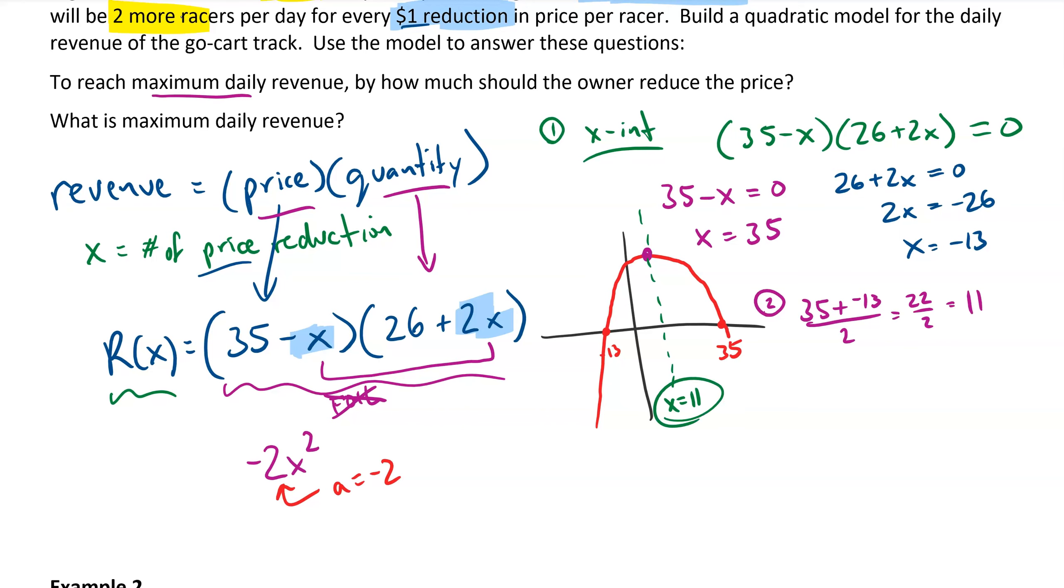I can plug that into the equation to find the height. So we have 35 minus 11 times 26 plus 22. And if we multiply those out, we get 24 times 48. Grabbing a calculator if you need to, we end up with 1,152. So my third step, I find that the vertex has coordinates of (11, 1,152), which tells me my maximum value for revenue is $1,152 per day.